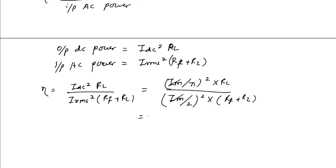So will be thousand upon thousand plus hundred, 4 by pi square into 100 percent, will equal to 36.8 percent. So only 36.8 percent power of the input is obtained at the output.